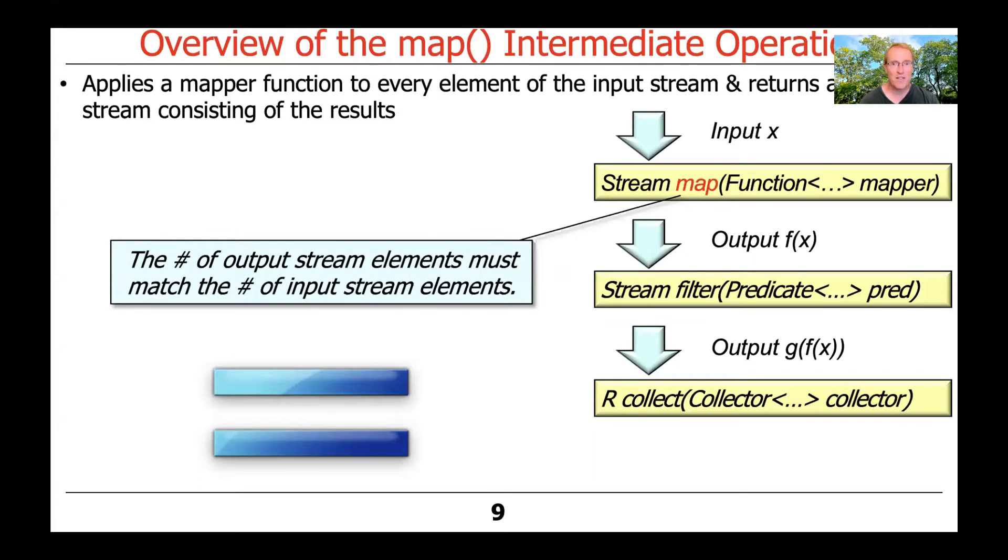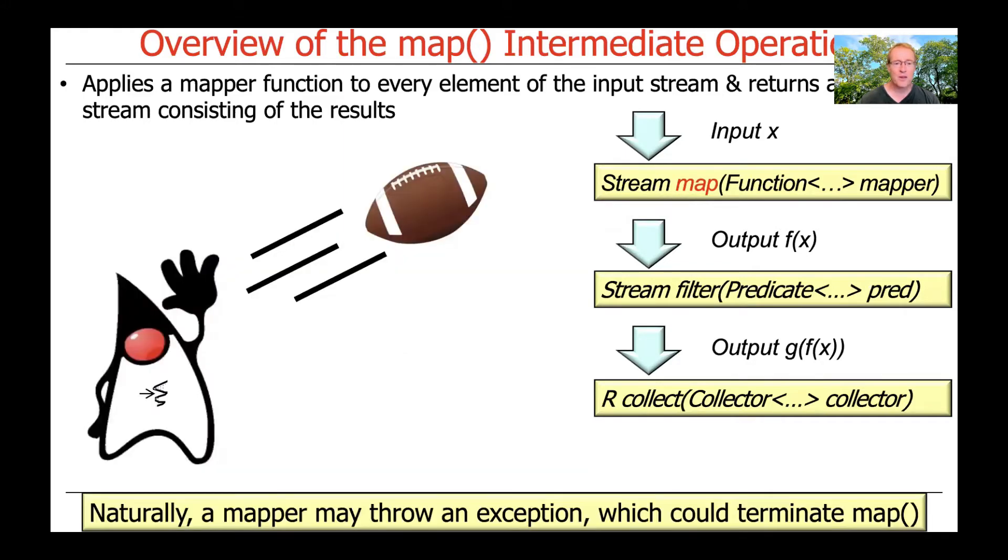So if you have 25 items in your stream, then that'll come in as the input stream, the mapper function will be applied to each of those elements, and 25 elements will be generated as the output stream. Of course, if something strange happens, like a Java null pointer exception that's not able to be handled by the mapper function, then the stream can prematurely terminate. But let's assume that doesn't happen. Think about map as being applied to every element in the stream.